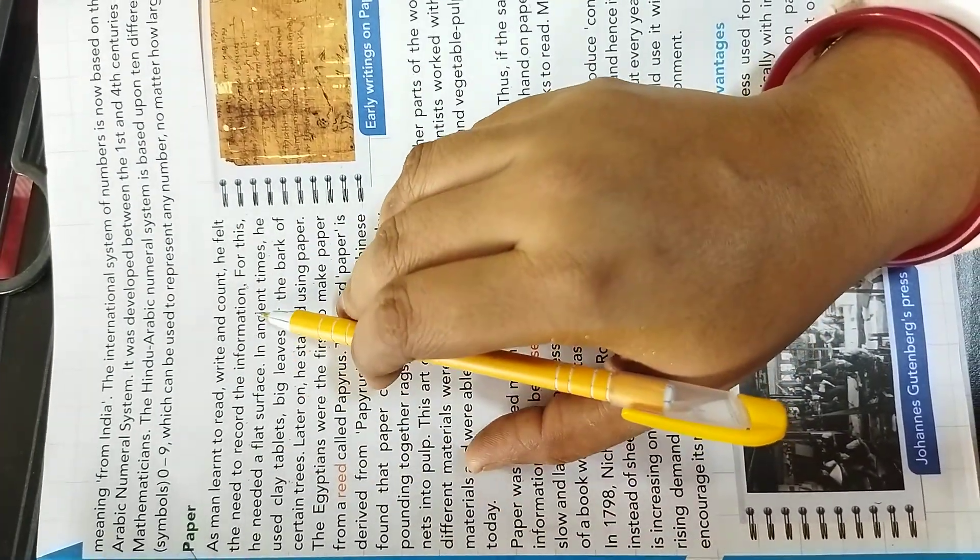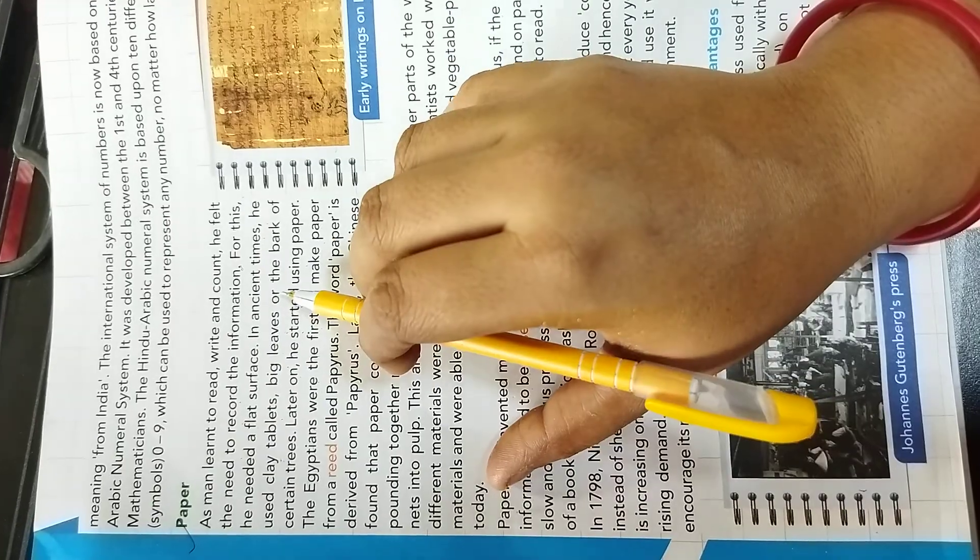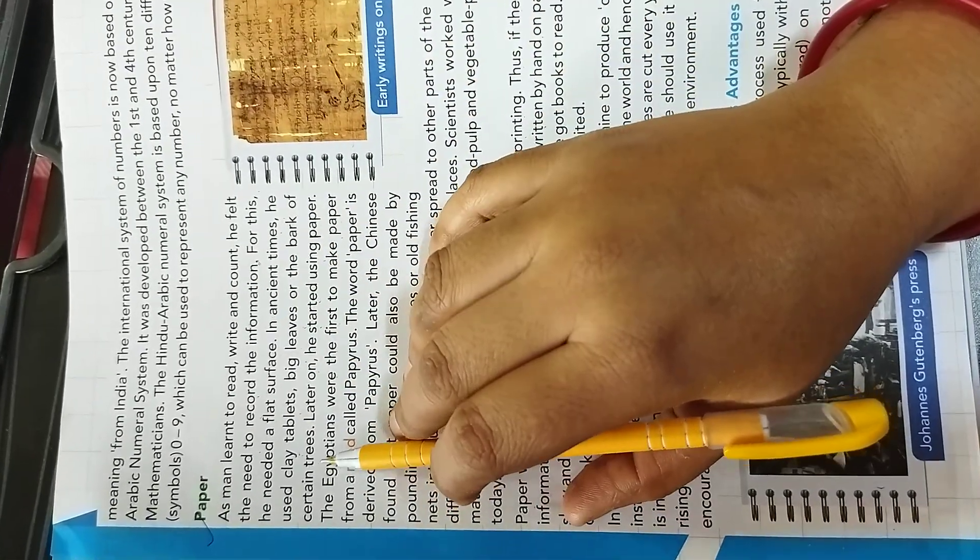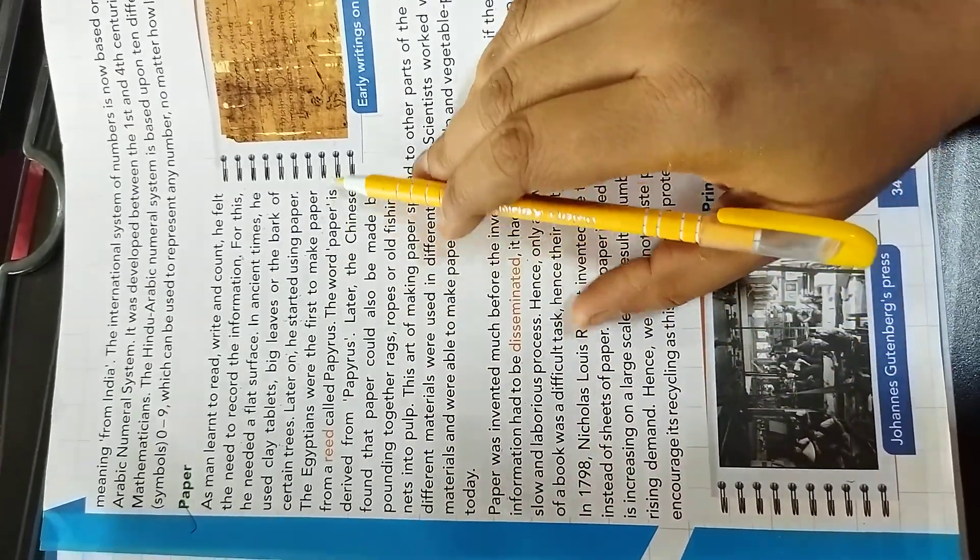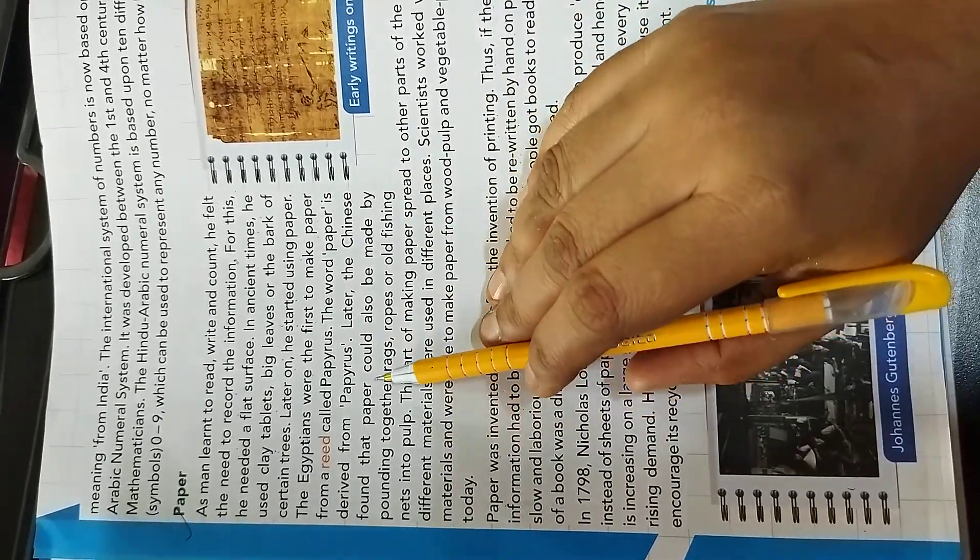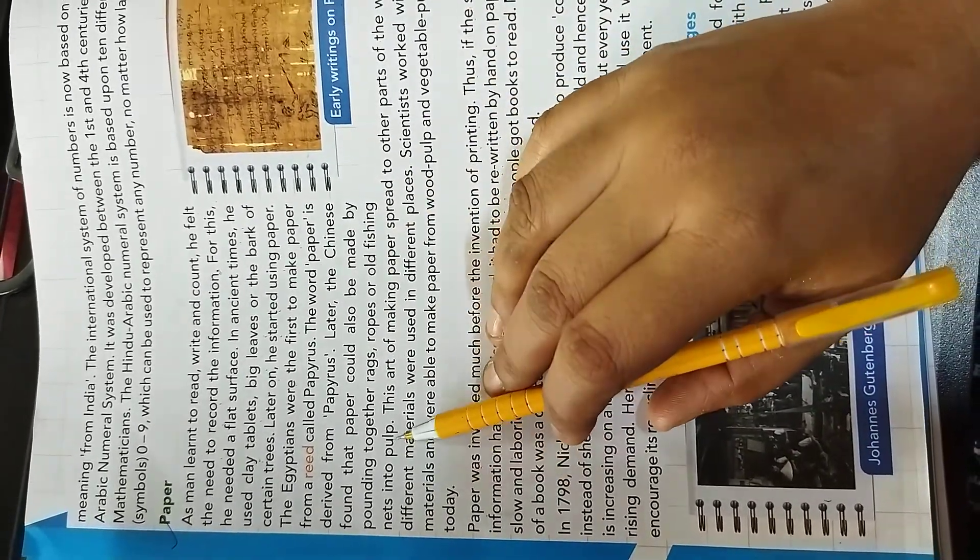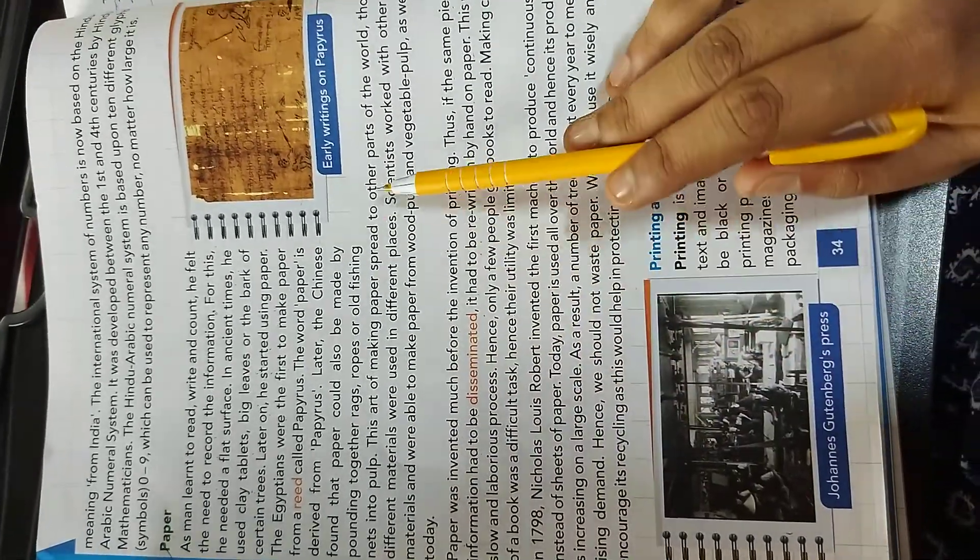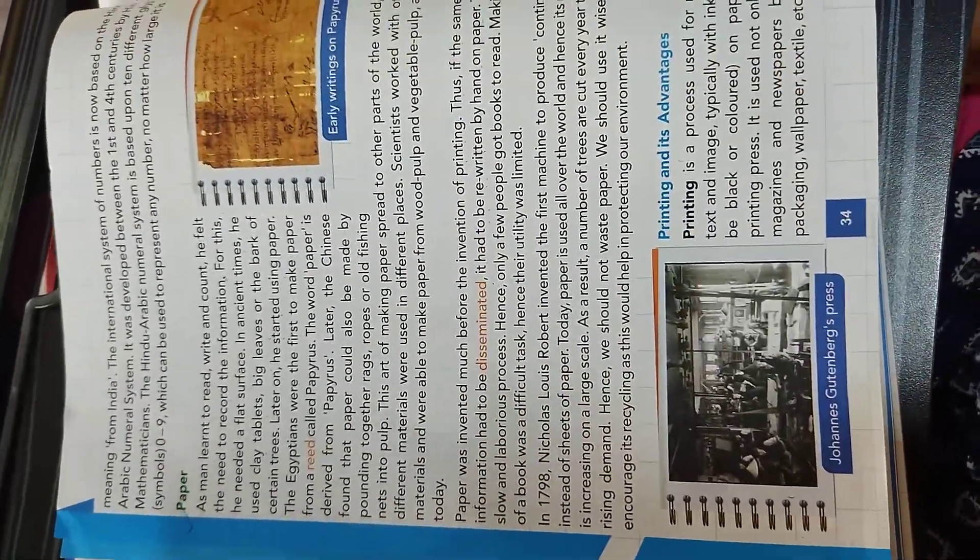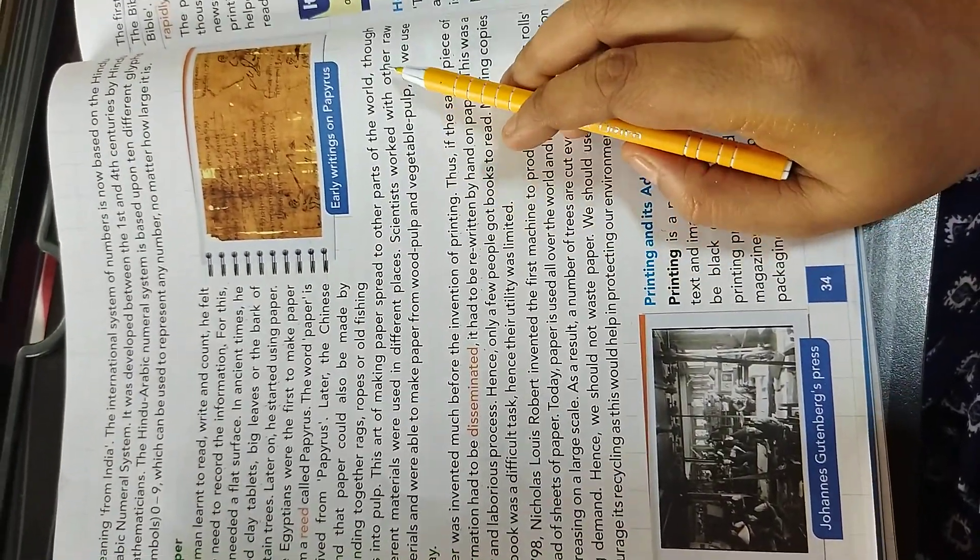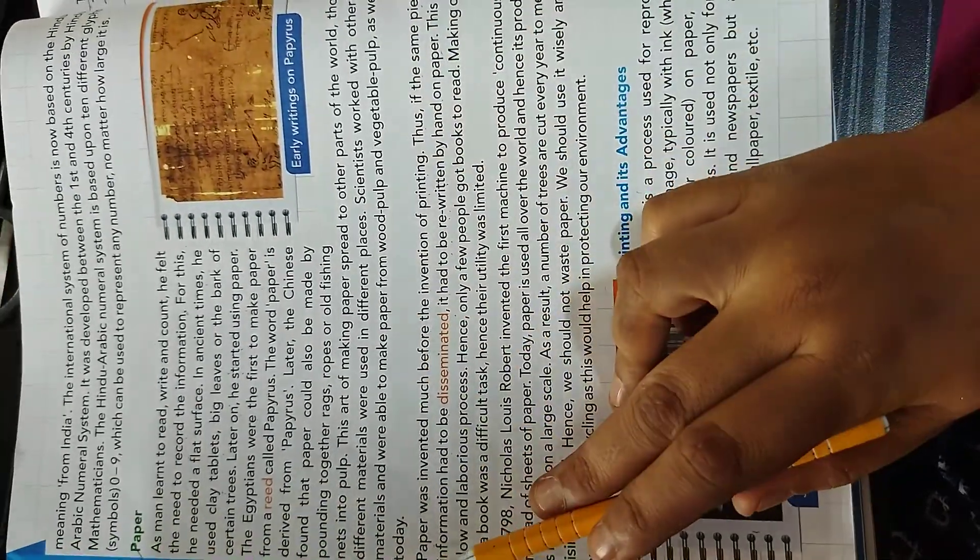As man learned to read, write and count, he felt the need to record the information. For this, he needed a flat surface. In ancient time, he used clay tablets, big leaves and the bark of certain trees. The Egyptians were the first to make paper from a reed called papyrus. The world paper is derived from papyrus. Later the Chinese found that paper could also be made by pounding together rags, ropes or old fishing nets into pulp.